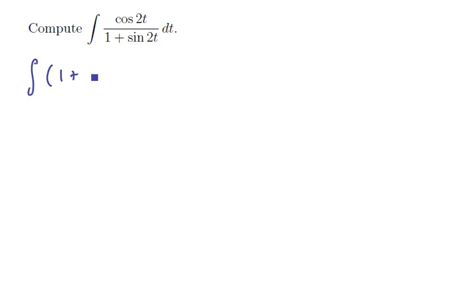We'll take the expression in the bottom, 1 plus the sine of 2t, don't forget those parentheses, and we'll bring it up to the top with a negative 1 power, times cosine of 2t dt, so parentheses where they belong, and powers.